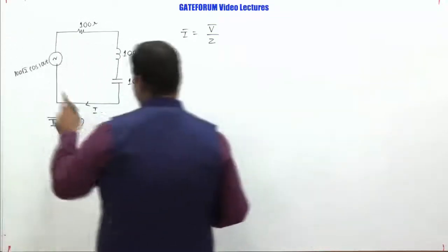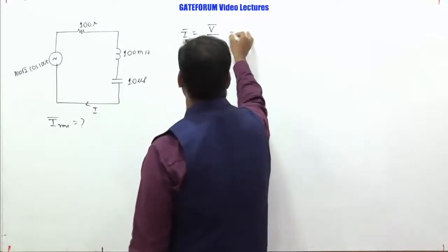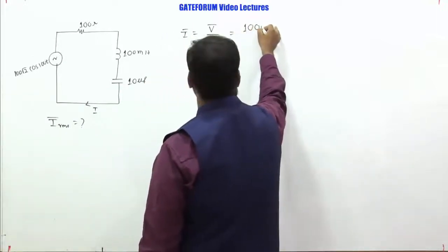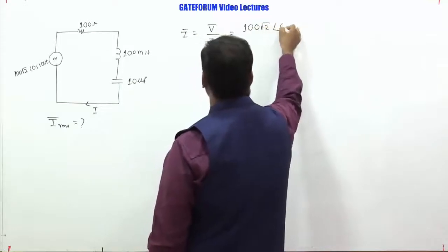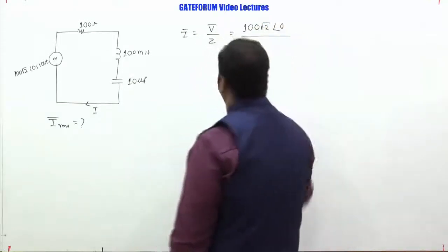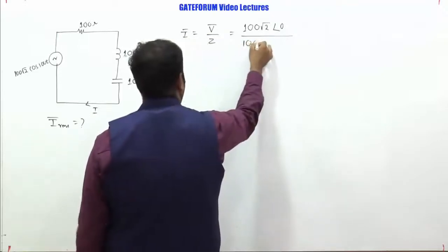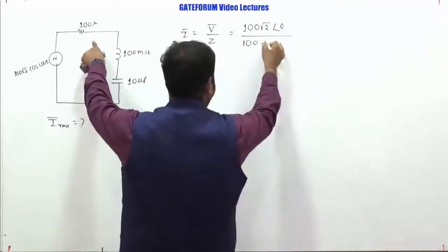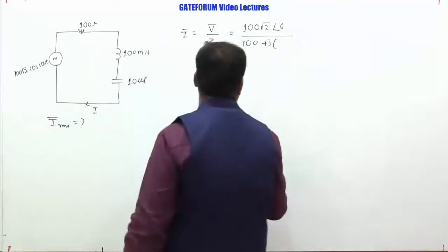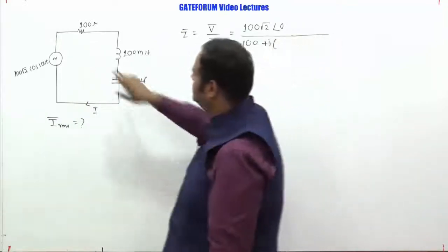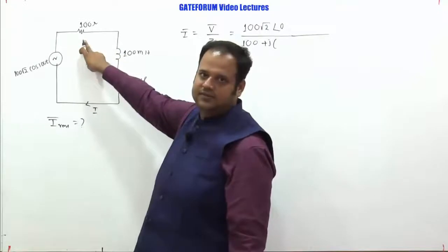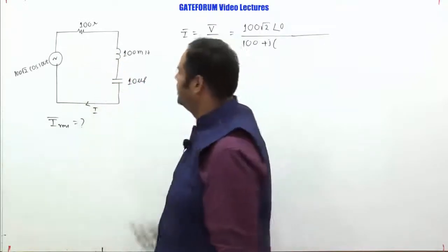So if I take the cosine as reference, this notation in phasor notation will be 100 root 2 angle 0, because cos I am taking as reference. And what is Z? Z is R plus, R is 100, plus j of omega L minus 1 by omega C. So this is a series circuit, this is R plus j of omega L minus 1 by omega C.